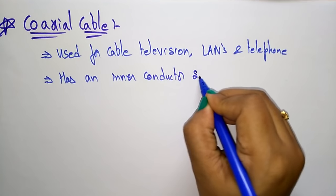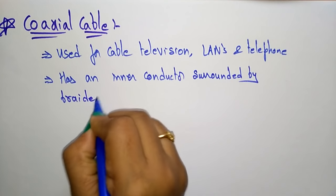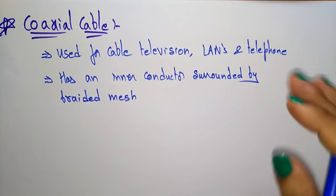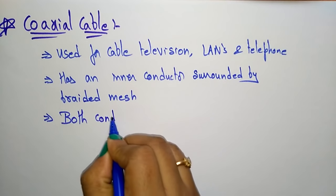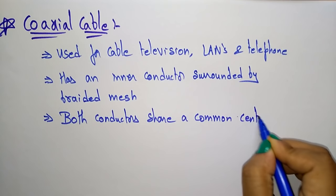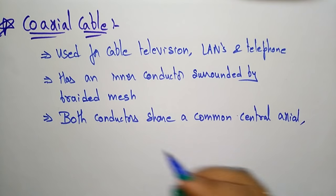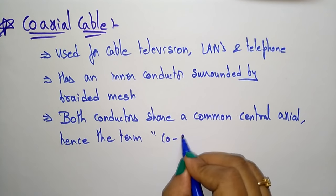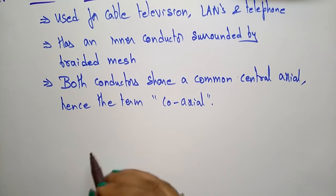The coaxial cable has an inner conductor surrounded by braided mesh. Both conductors share a common central axis. That is why we call it coaxial — because they are sharing a common central axis.